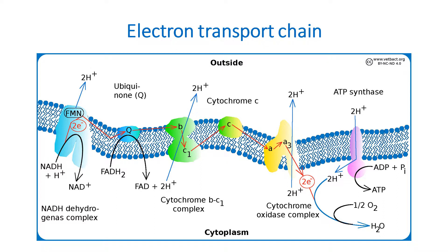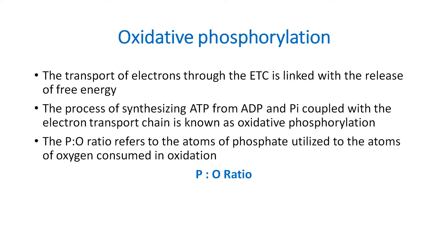Here we see the electron transport chain on the inner membrane of the mitochondria. It is a multi-enzyme complex including FMN, coenzyme Q, cytochromes B, C1, C, A, and A3. Later we discuss ATP synthase and the synthesis of ATP by hydrogen ions. The transport of electrons through the electron transport chain is linked with the release of free energy. The process of synthesizing ATP from ADP and inorganic phosphate coupled with the electron transport chain is known as oxidative phosphorylation.